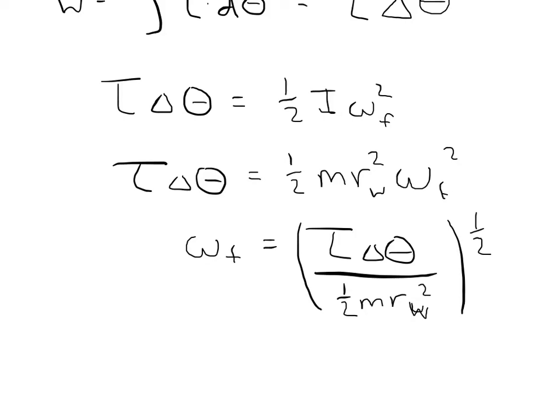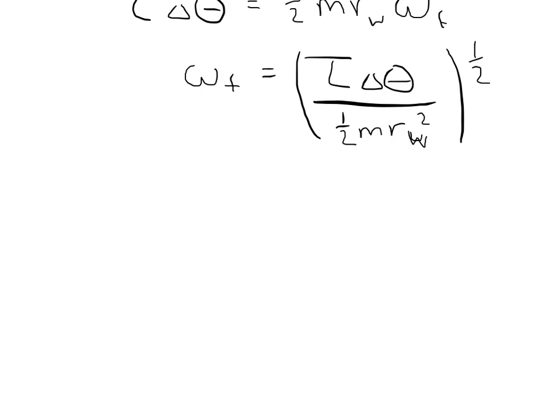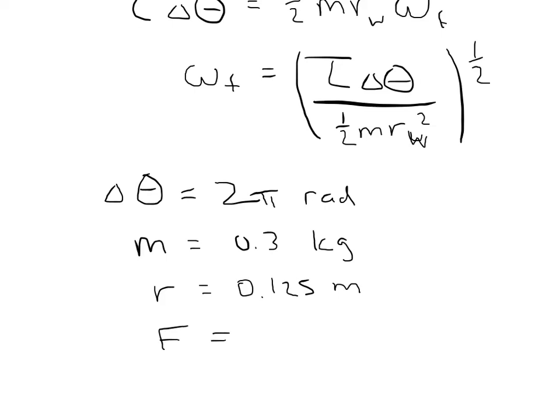Then I can plug in all of my numbers. I see that delta theta is one revolution, which means it's two pi radians. M of the wheel is 0.3 kilograms. The radius, I give you the diameter of the wheel, which is 0.25 centimeters, so the radius is half that, so it's 0.125 meters, converting everything into the right units. And then the force is going to be 0.15 newtons.